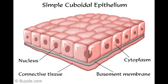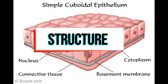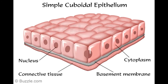Structure: Being a simple epithelium, it has a single layer of cells. Cells are cube-shaped, though from the top they appear like polygons or hexagons, and appear square-shaped from the side. Cells are as wide as they are tall, which means that the distance between adjacent nuclei is equal to the height of the cells. The nuclei are spherical and located at the center of the cells, or slightly towards the base.